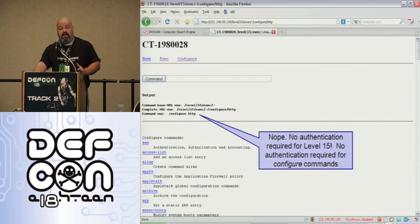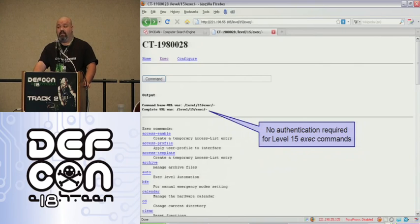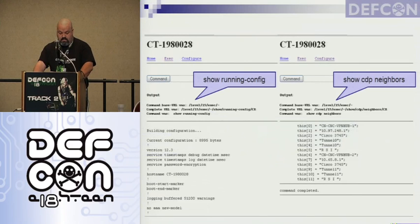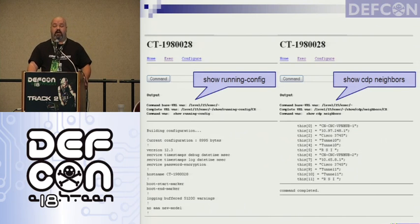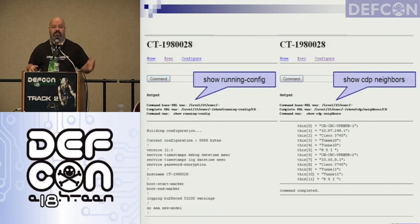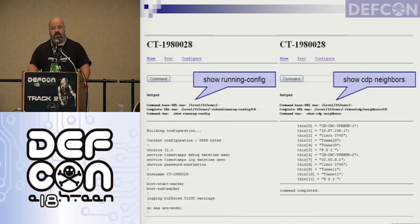This is the configure commands menu — we got in with no authentication at all. Here's the execute command menu, also accessible without any authentication. I ran show running-config and got the running config. I ran show CDP neighbors and got some other devices around it. Some of these might be students doing a CCNA with a router set up, but some are infrastructure devices belonging to ISPs.